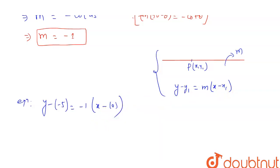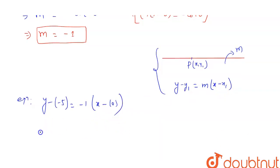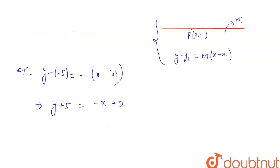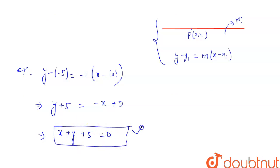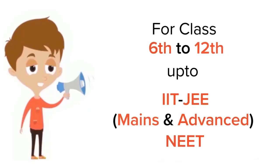So the equation is y + 5 = -x, which gives x + y + 5 = 0. This is the required equation.